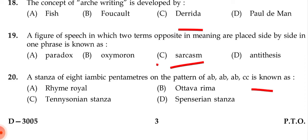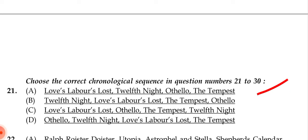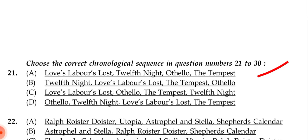Next question: A stanza of eight iambic pentameters on the pattern ab ab ab cc is known as — (a) rhyme royal, (b) ottava rima, (c) Tennysonian stanza, (d) Spenserian stanza. The correct answer is (b) ottava rima.